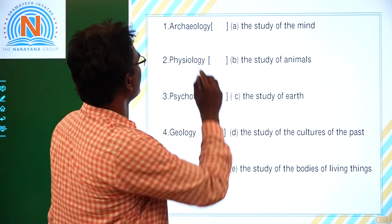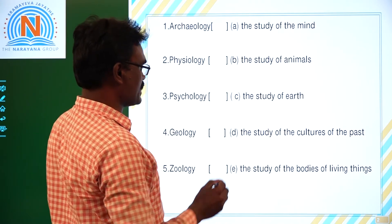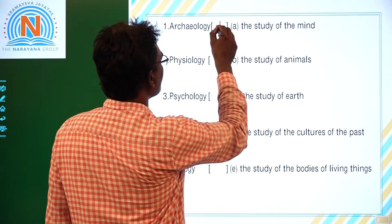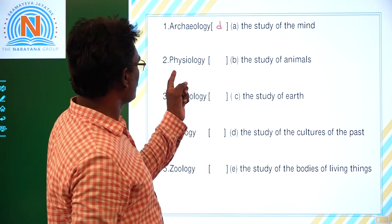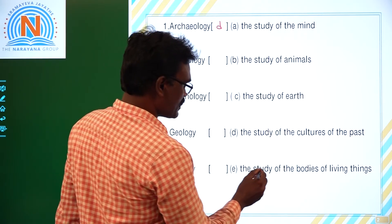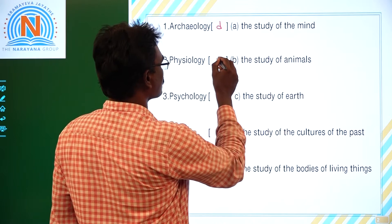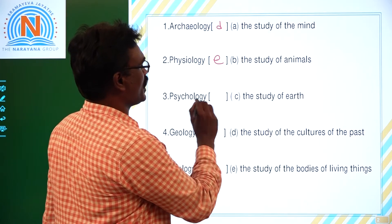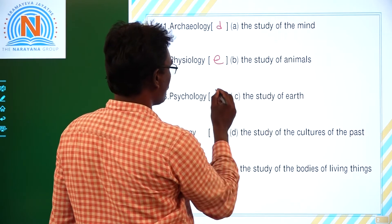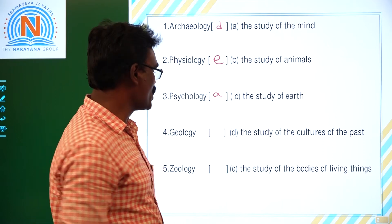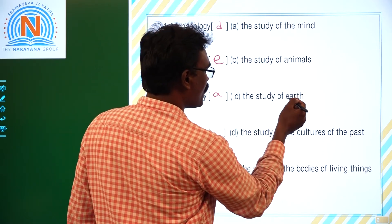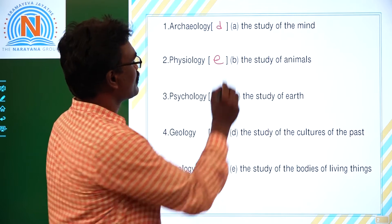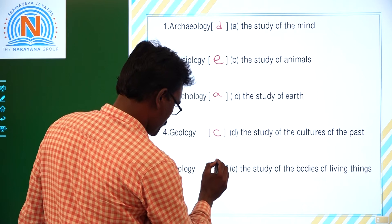Right, now we have to match it. First one, archaeology - the answer is the study of the cultures of the past, so option D is the right answer. Second one, physiology - the study of the mind, option A. Fourth one, geology - the study of earth, option C. Fifth one, zoology - the study of animals, option B.